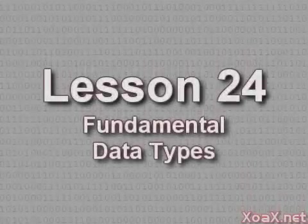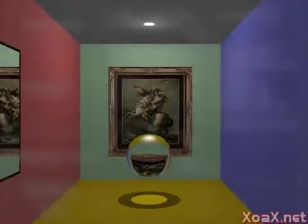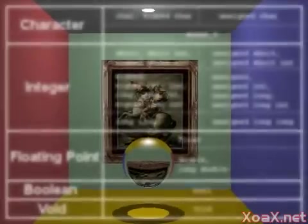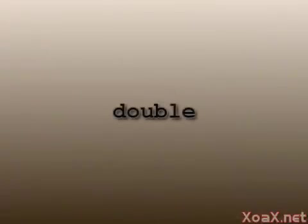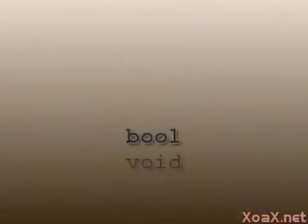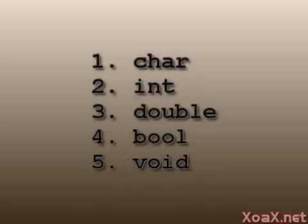Lesson 24 Fundamental Data Types. We have introduced four basic data types so far: char, int, double, and bool. If we include the void type, then we have five basic types.